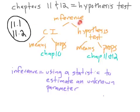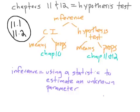I want to begin with this chart which is one we've looked at before. We've been talking about inference for a while — we did that in chapter 10, and inference is going to be the big topic throughout chapters 10, 11, 12, 13, 14, and 15. What do we mean by inference? We mean using a statistic to estimate an unknown parameter, exactly what we were doing in chapter 10 when we talked about confidence intervals. In AP Stats, inference falls into two big categories: confidence intervals, which we talked about in chapter 10, and hypothesis tests, which we'll talk about in chapters 11 and 12.